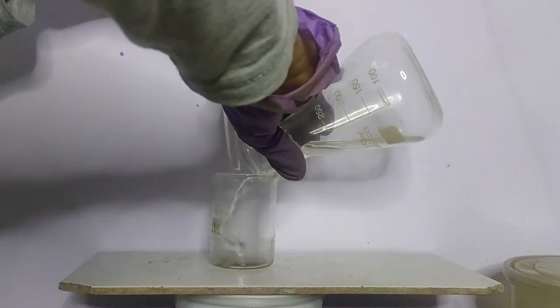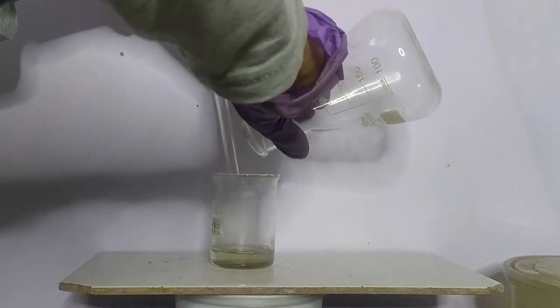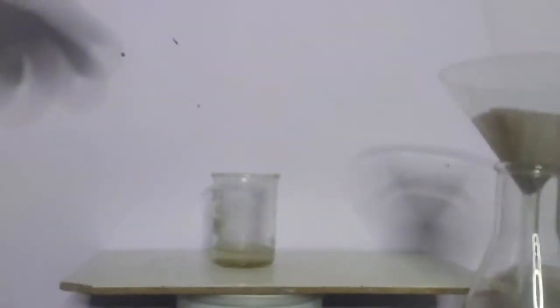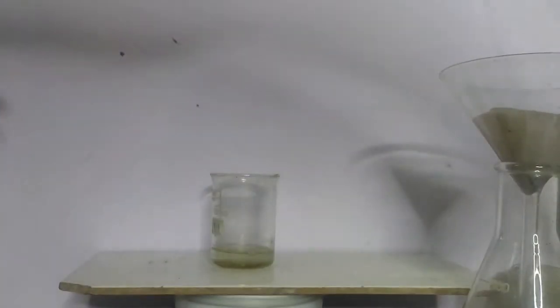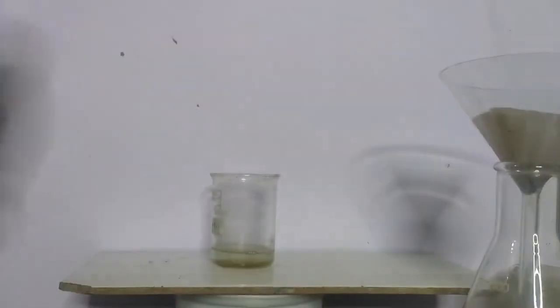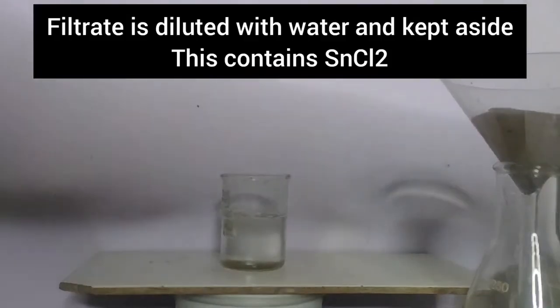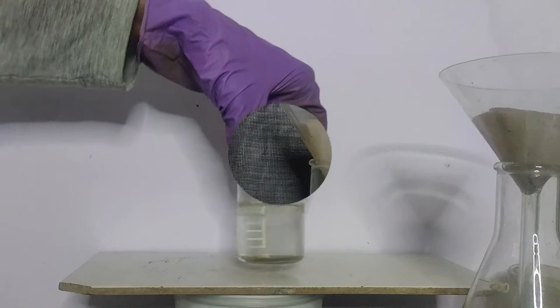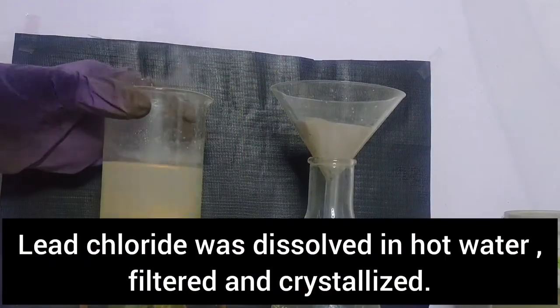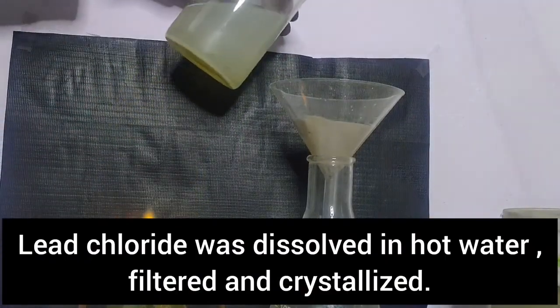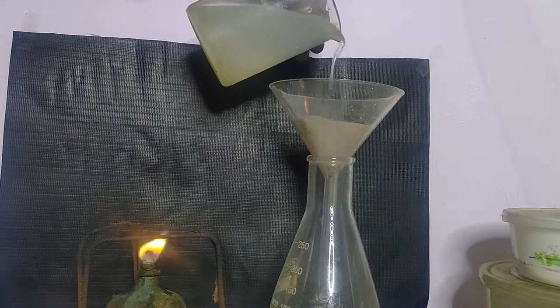Now, this filtrate contains tin chloride solution. Now this solution was diluted with some water. Now, it was kept aside and lead chloride were dissolved in hot water, filtered and recrystallized.